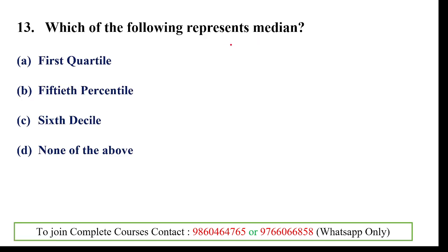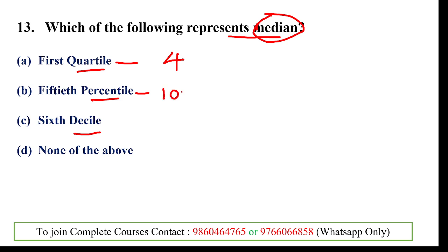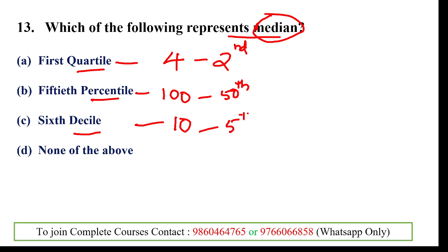Next question: which of the following represents the median? Median is the middle value. Among quartile, percentile, and decile — quartile divides data into 4 parts, percentile into 100, decile into 10. The middle value corresponds to the 2nd quartile, the 50th percentile, and the 5th decile.